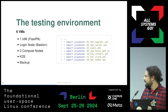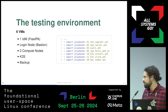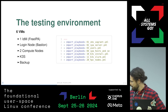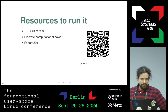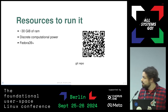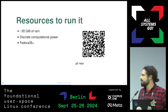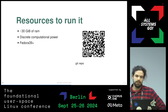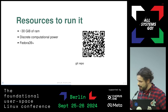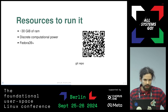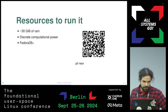How does it look like? It's a sequence of Ansible playbooks that you just have to run to execute it. Resources needed to run it — we try to keep it lean: 30 gigabytes of RAM, discrete computational power, and we tested only on Fedora 39 and above, because we are a very small group. If you want to try it, the Git repo is available.